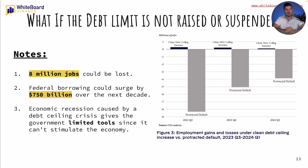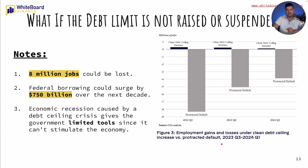So what if the debt limit is not raised or suspended? Looking at this chart — millions of jobs on the y-axis — eight million jobs could be lost. Federal borrowing could surge by $750 billion over the next decade. An economic recession caused by a debt ceiling crisis gives the government limited tools, since it can't necessarily stimulate the economy. This chart shows employment gains and losses under a clean debt ceiling increase versus a protracted default, projecting from Q3 2023 through Q1 2024.